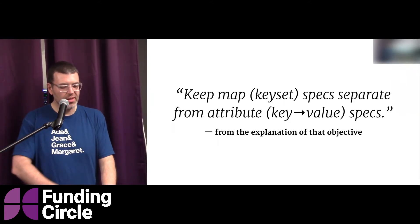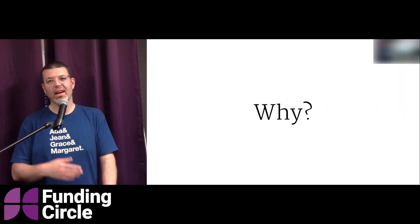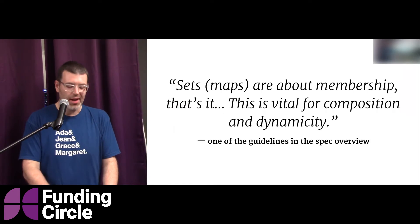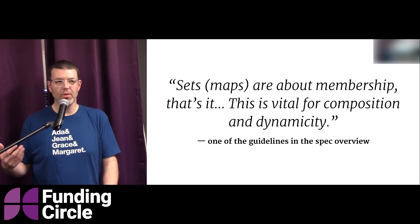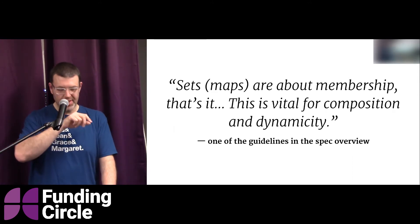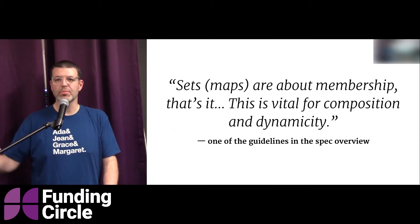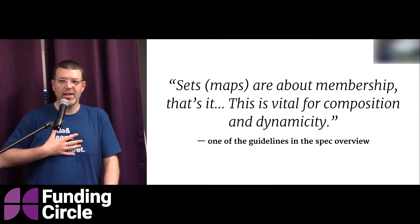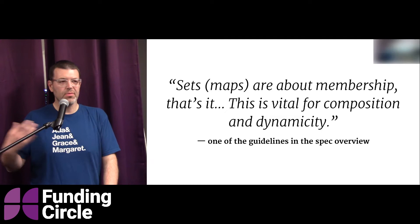One of the objectives of spec is to decouple them and specify them all separately — keep the map specs separate from the attribute specs. One of the guidelines in the spec overview that I found notable was that map specs are about membership and that's it. By retaining that constraint, you get advantages in terms of composition and dynamicity — retaining those desired properties.